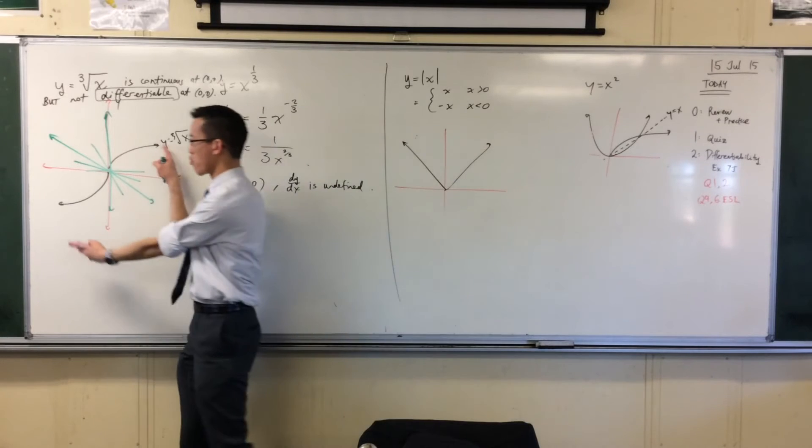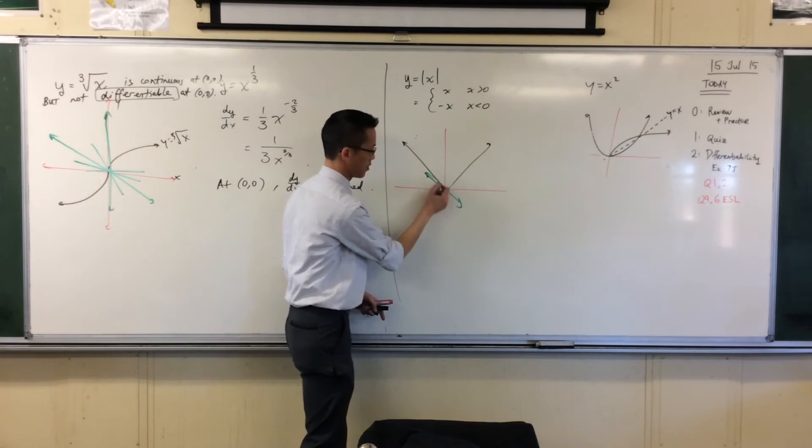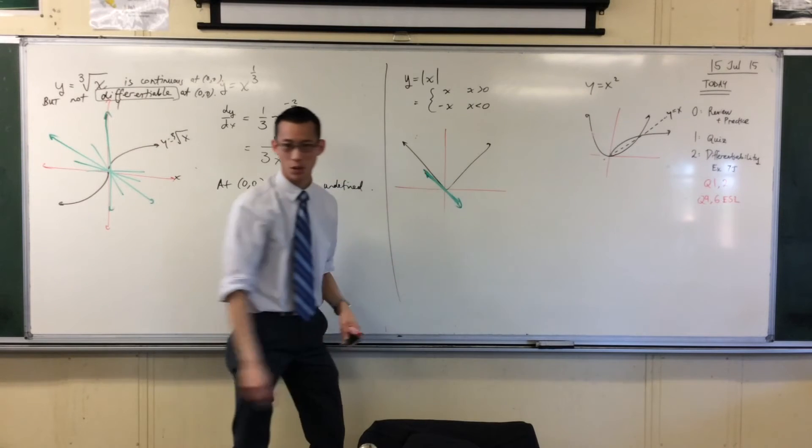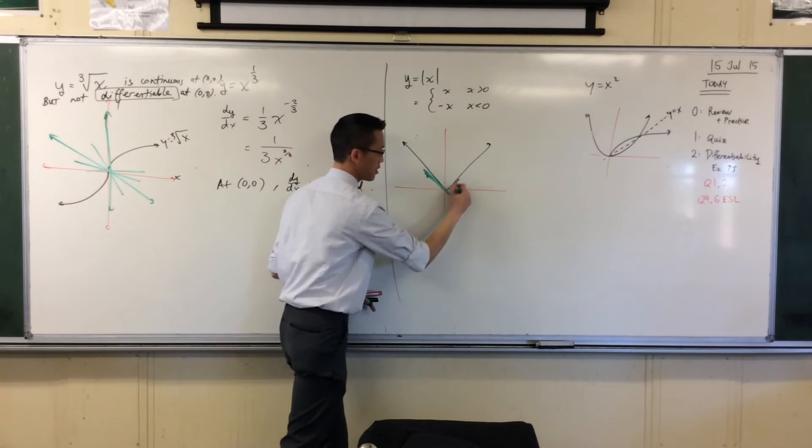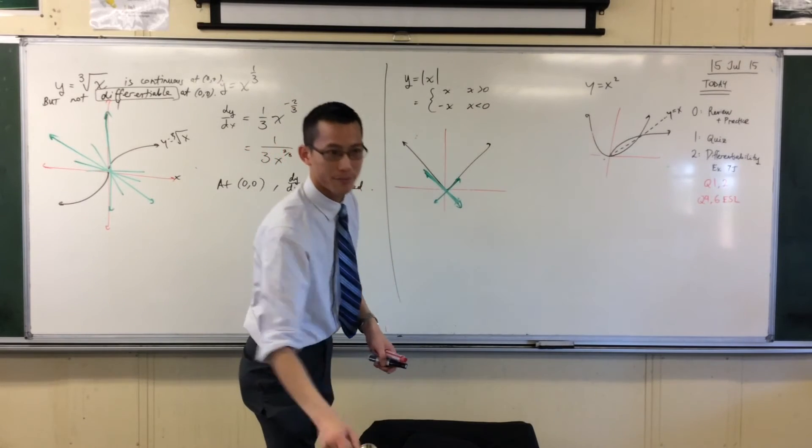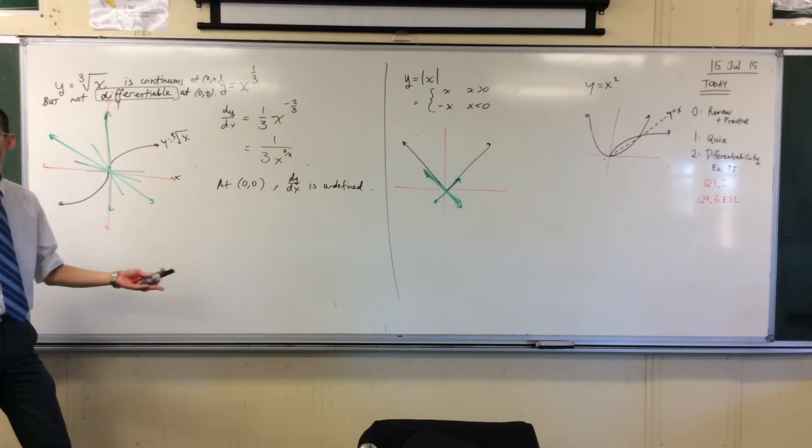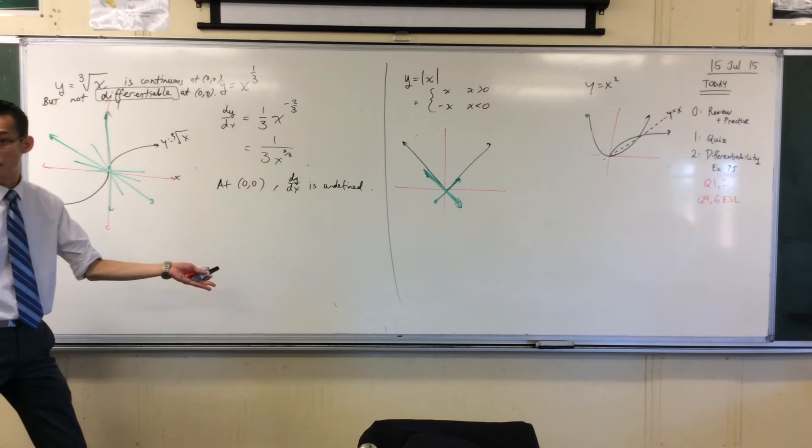But at least here, they're all approaching the same thing, whereas here, is it this line? Sorry, that's y equals minus x, I just didn't want to go top. Is it that one, or is it this one? And the answer is, neither of them is a more legitimate claimant to the crown. There's no tangent at that point.